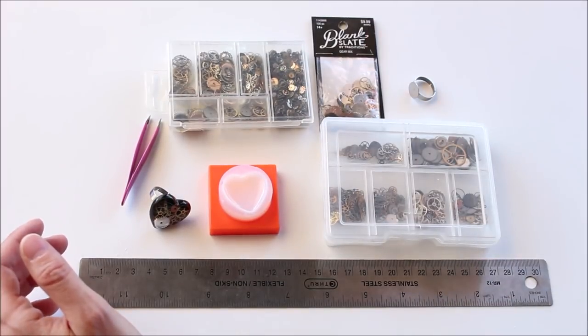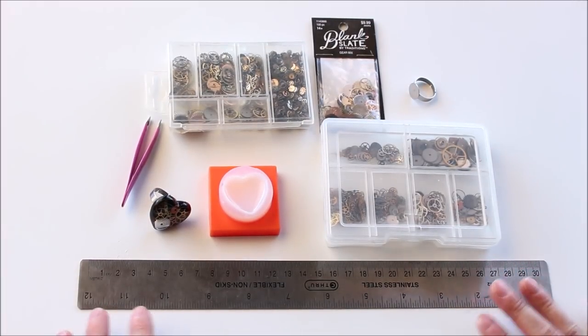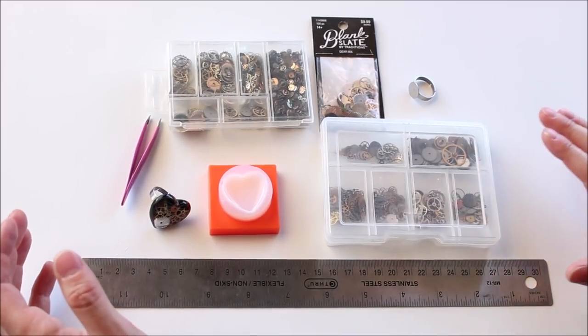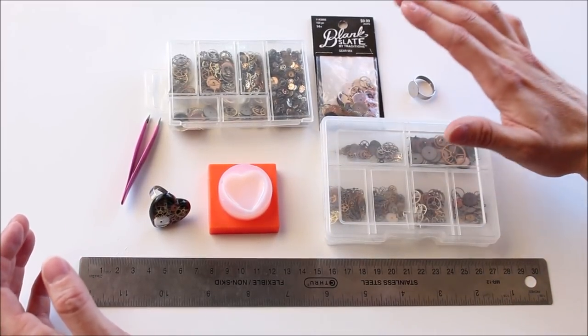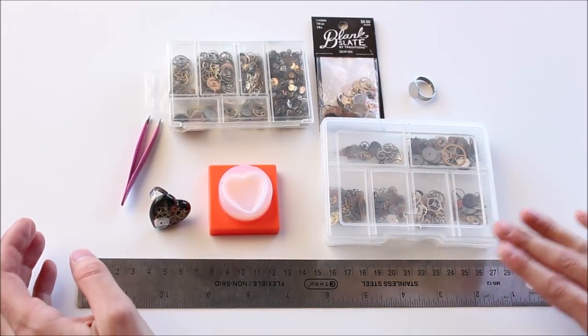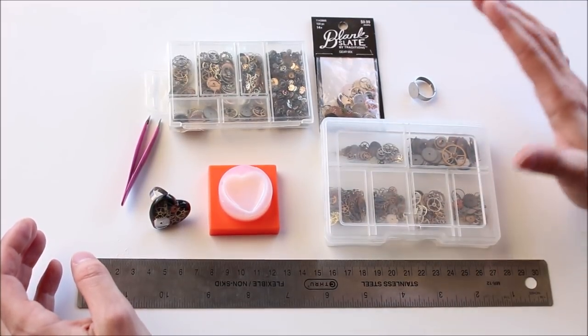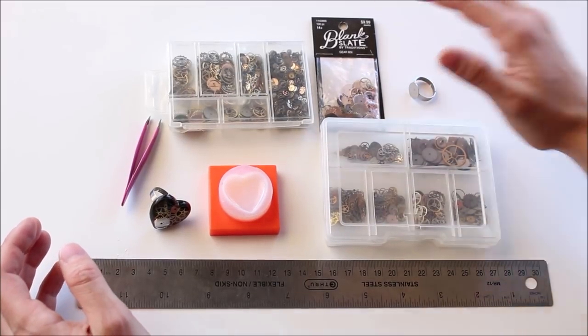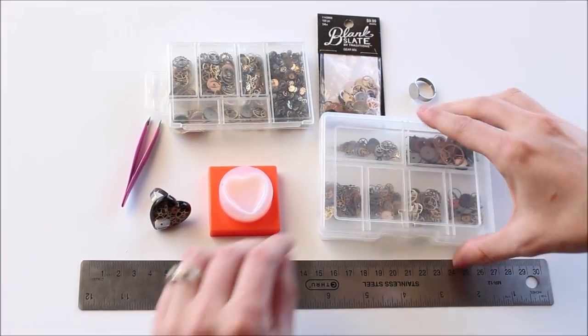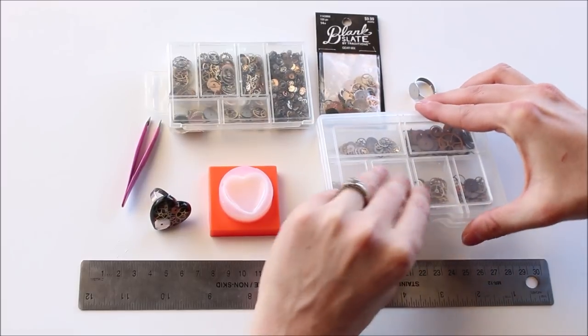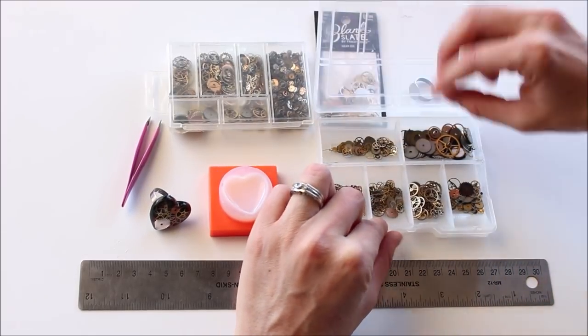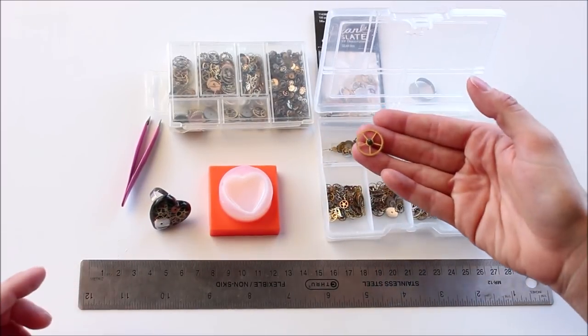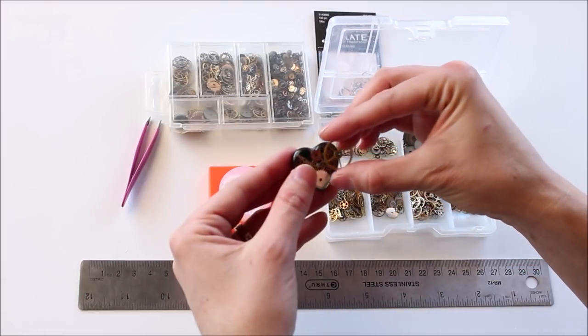So you might be curious about why I have a ruler here. I want to give you a little bit of advice if you decide to go shopping for watch parts. Keep a ruler on hand because you don't know what you're going to get unless you look at the sizing of the stuff and then check the ruler. See, for this, we're going to need smaller gears. Something like this one would be too big. Well, maybe. I guess it depends on what you're going for.